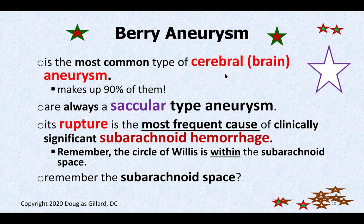Now that we've reviewed the anatomy, let's look at the berry aneurysm. This is guaranteed on boards and on my test. It is the most common type of cerebral aneurysm — it makes up 90% of all aneurysms of the brain. Any cerebral vascular aneurysm is most likely going to occur somewhere in the circle of Willis, and it will be a berry aneurysm. It is always a saccular aneurysm — a very focal outpouching that looks like a berry coming off the main vessel, as opposed to a fusiform aneurysm.